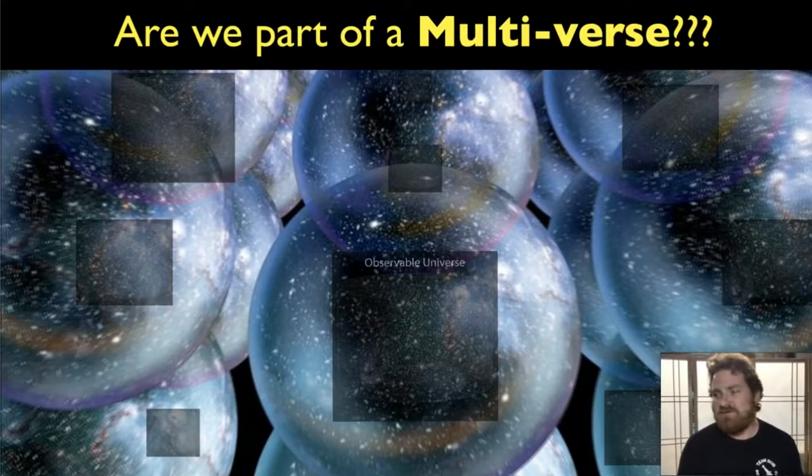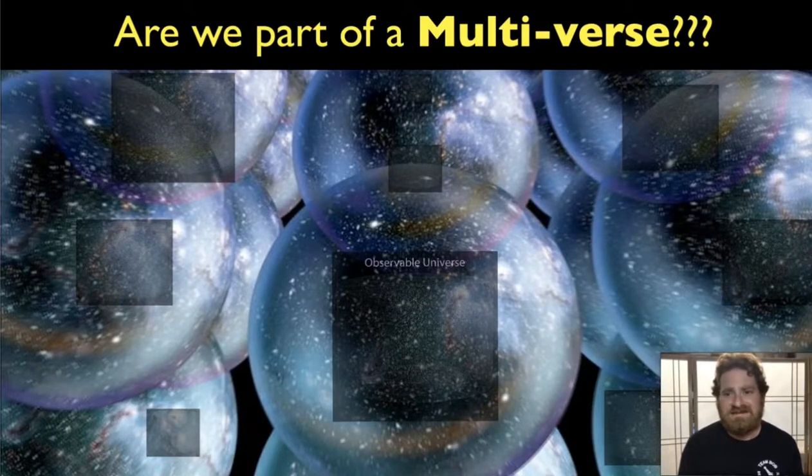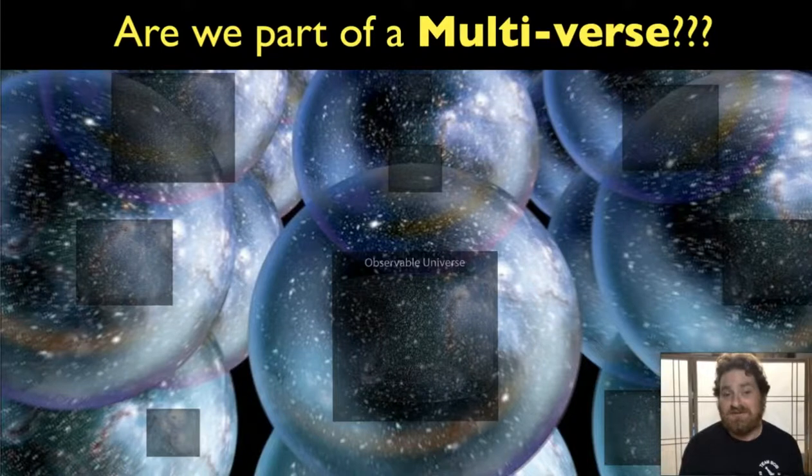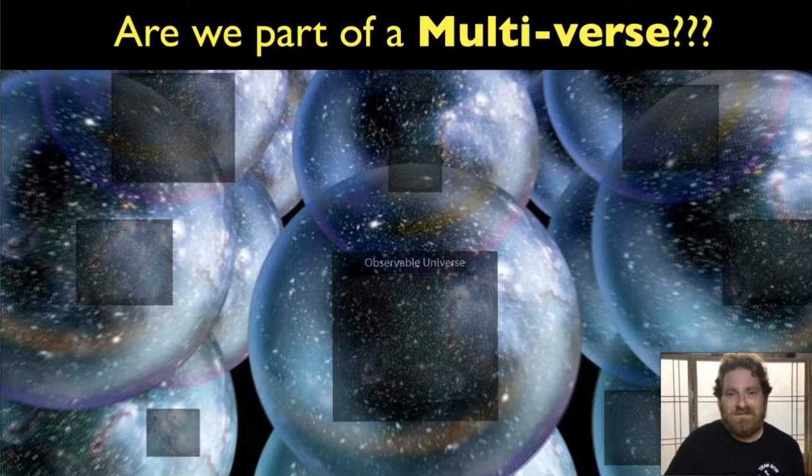It may be the case that most universes don't have the right conditions for life, but if you run that experiment enough times, occasionally you'll get one that does. And so the fact that one that spawns life exists at all may itself be evidence that there are many other universes out there for us to actually be probable at all. So what do you think of that?